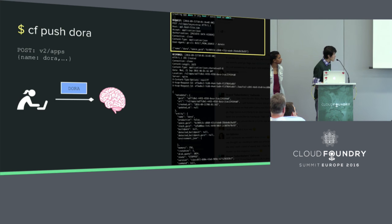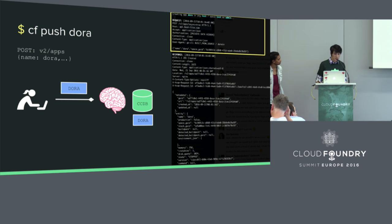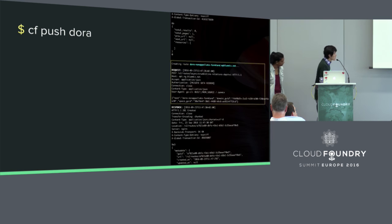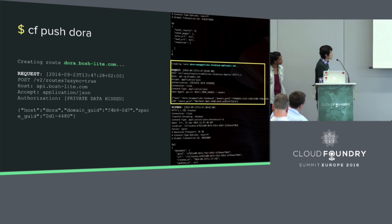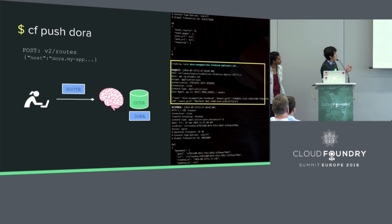When Cloud Controller receives this piece of information, it creates an entry in the CCDB and remembers that. The CCDB is the database Cloud Controller uses to remember basically everything it knows about the state of the world. After that, the next thing the CLI does is to create a route, so we can route traffic to the application. It does this by posting to the V2 routes endpoint. When CC receives this piece of information, it creates an entry in the database and remembers that.